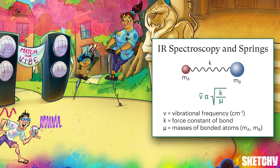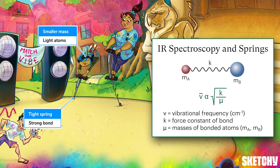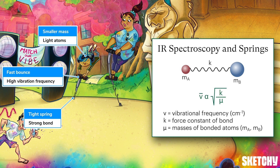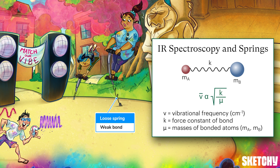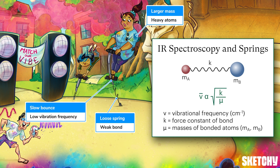The way bonds vibrate is a lot like the way springs vibrate. If you've got a tight spring — like this tightly coiled pogo stick — or small objects on the spring like this small student, the spring will vibrate very quickly. Bonds are the same way: strong bonds and/or light atoms create high vibration frequencies. In contrast, a weak bond or one with heavy atoms on either end will vibrate slowly — like the larger pogo-er on a looser, weaker-springed stick bouncing at a more leisurely pace.